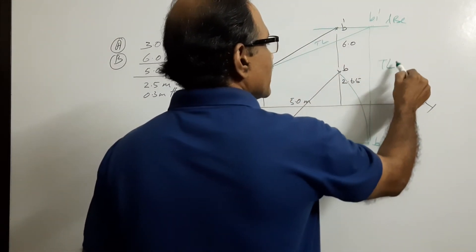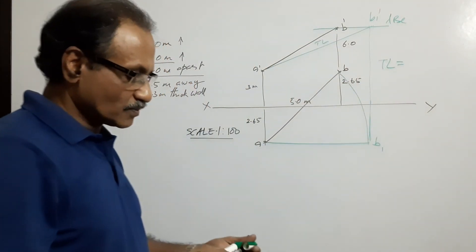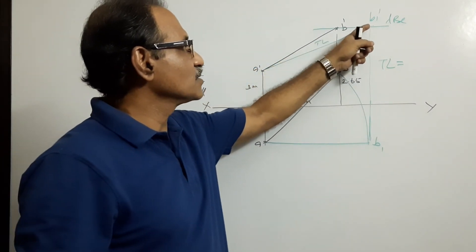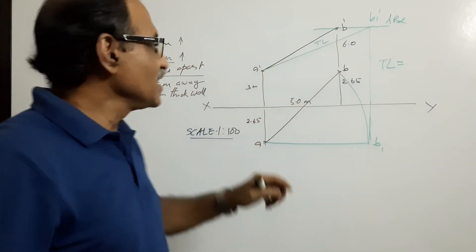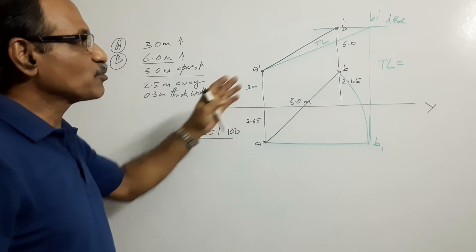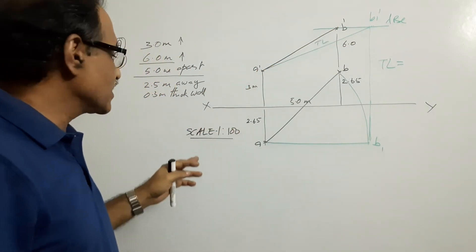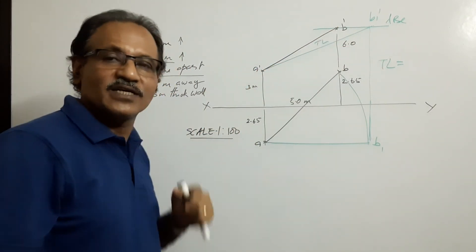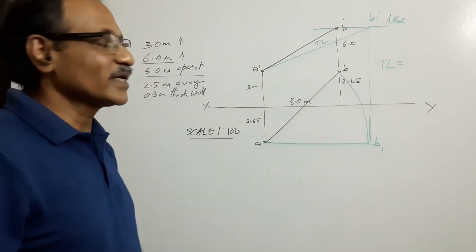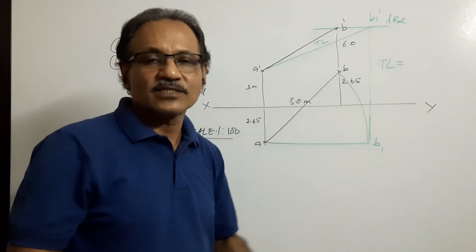Measure A dash–B1 dash and multiply by the scale. For example, if you get eight centimeters, the actual distance between the oranges is eight meters. You report the true length — the distance between the oranges — in meters.